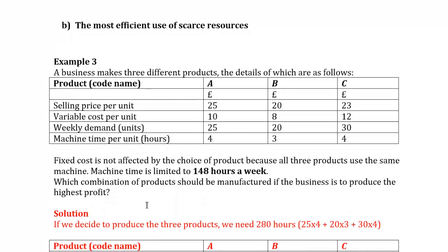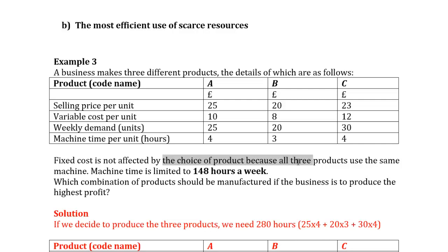Let's move to the second decision: the most efficient use of scarce resources. The magic word again is contribution margin — but now it's the contribution margin per scarce resource. A business makes three different products A, B, C with given selling prices, variable costs, and weekly demand of 25 units of A, 20 of B, and 30 of C. Machine time per unit is 4 hours for A, 3 hours for B, and 4 hours for C. Machine time is limited to 148 hours a week — that is our scarce resource.